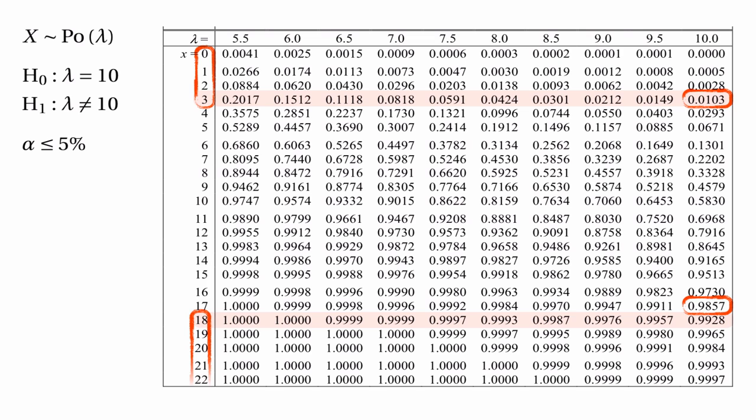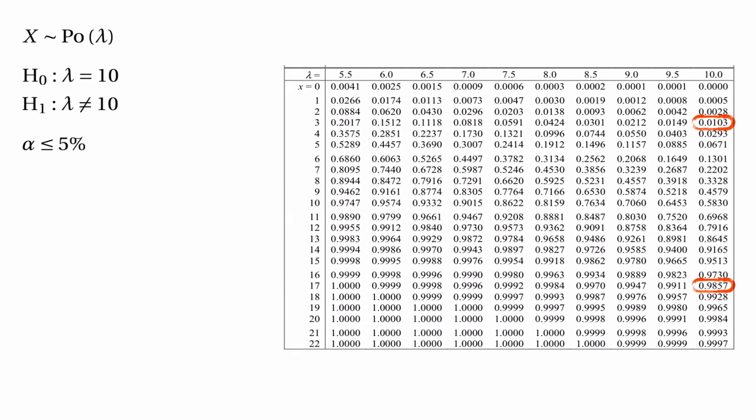So the critical region is 0, 1, 2, 3 together with 18, 19 and higher, and the critical values are 3 and 18. To work out the exact level of significance: the probability of getting 0, 1, 2, or 3 if the null hypothesis is true is 0.0103, and the probability of getting 18, 19, 20 or higher is 1 minus 0.9857. So the exact level of significance is 0.0103 plus 1 minus 0.9857, which equals 0.0246.